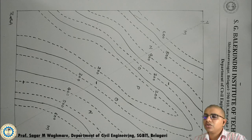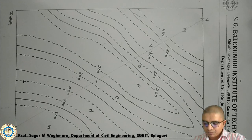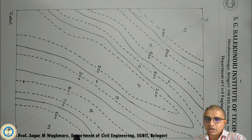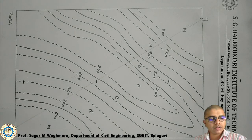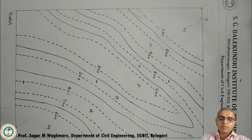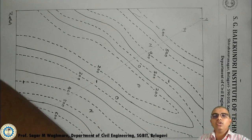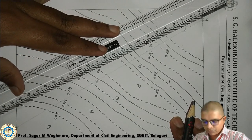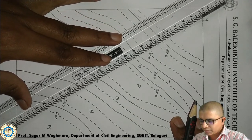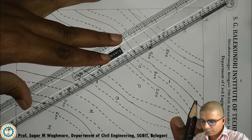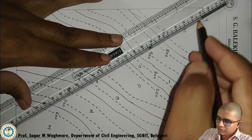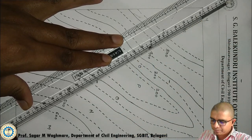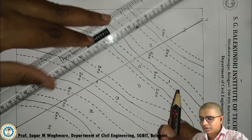We will be drawing a section with respect to the geology, the contour lines, and the bedding planes. The first important task is to draw the section line — that is, the X-Y line. I will hold the scale and draw a section line. This is my X and Y line, and this is my section line.